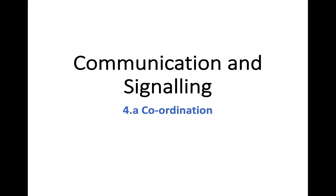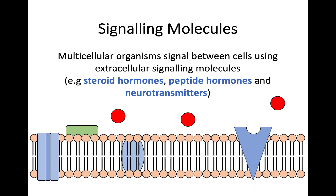This sub-key area is really just going to start to introduce the idea of signaling molecules and the effect they're going to have on a cell, which we'll go into in a lot more detail in the following sub-key areas. Multicellular organisms are able to signal between cells using extracellular signaling molecules. Some examples of these you need to know are steroid hormones, peptide hormones, and neurotransmitters.